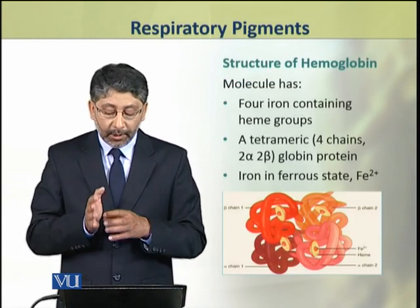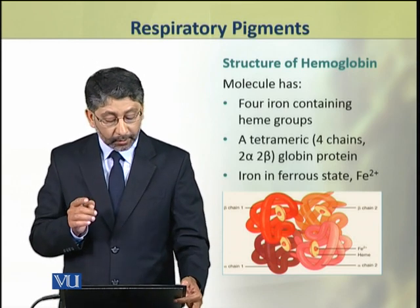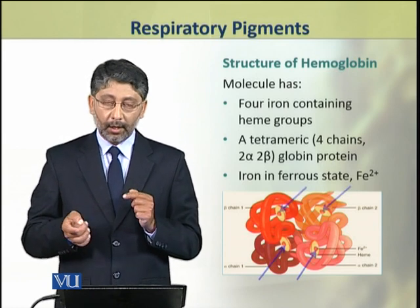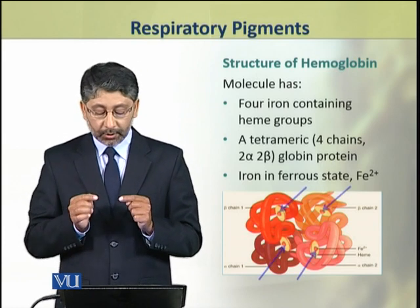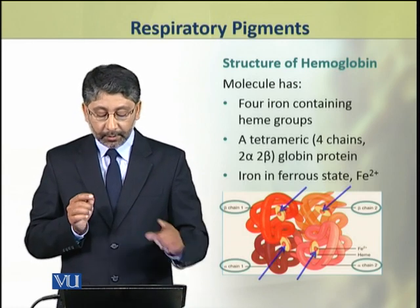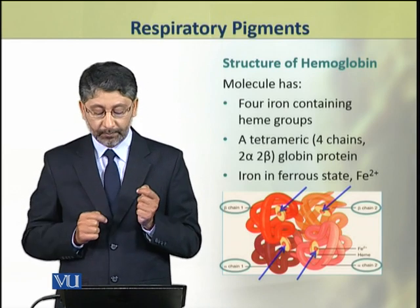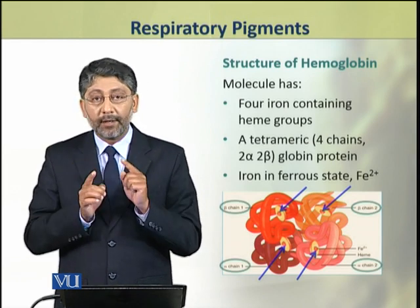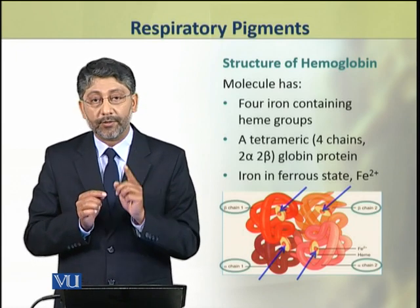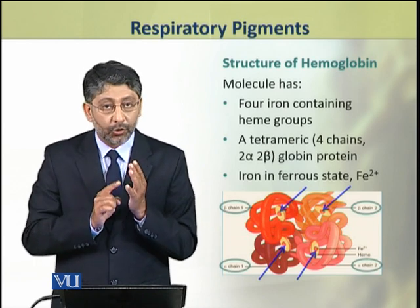A molecule of hemoglobin has four iron-containing heme groups, which are attached to a tetrameric globin protein that has four chains — two alpha and two beta chains. The iron in hemoglobin is in the ferrous state, that is, a valency of plus two (Fe²⁺).